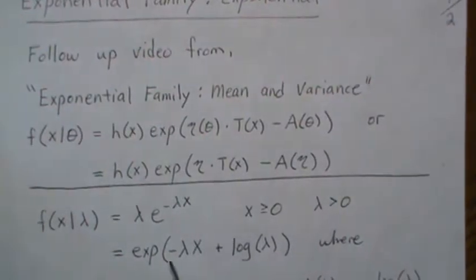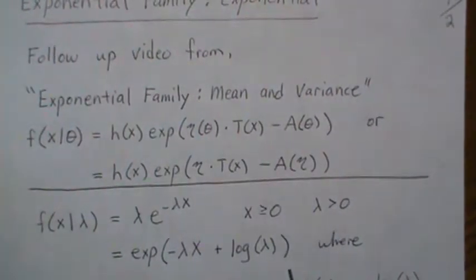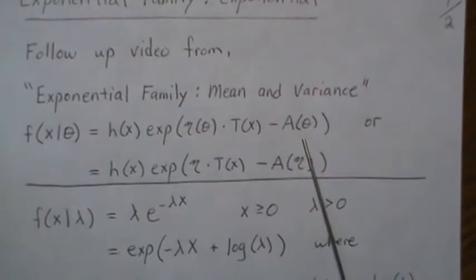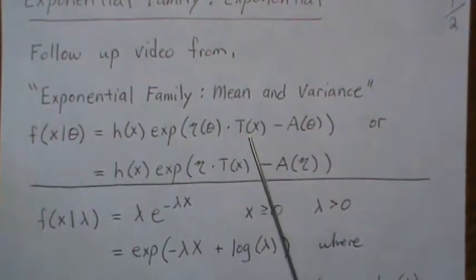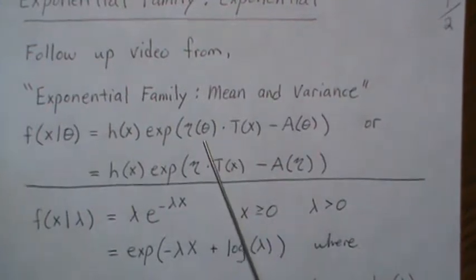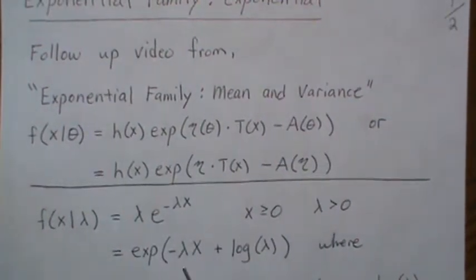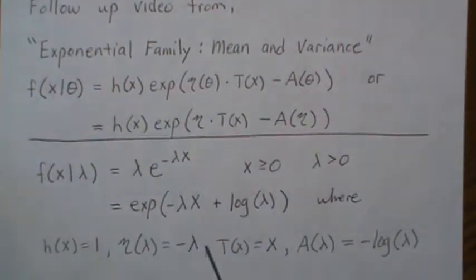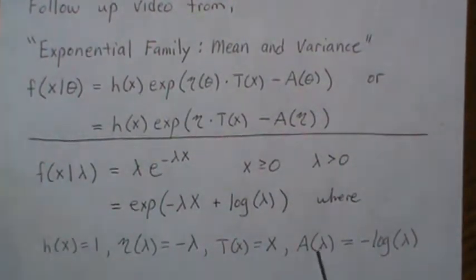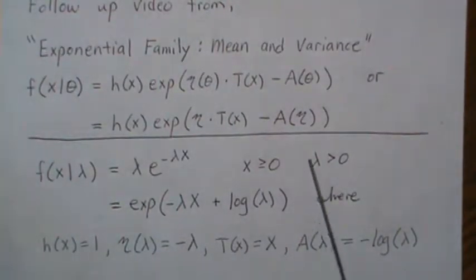Now we're actually finished because this is a function of our parameter and our data: a function of data which is just x, times a function of our parameter, times a function of x which is 1. This A of lambda is called the log partition and this is a sufficient statistic which we won't talk about in this video.